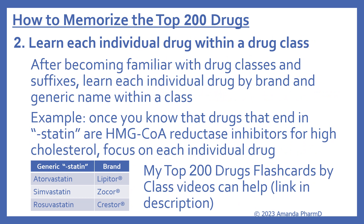Number two for how to memorize the top 200 drugs: learn each individual drug within a class. After becoming familiar with drug classes and suffixes, learn each individual drug by brand and generic name within a class. Continuing with our statin example — once you know that drugs ending in 'statin' are HMG-CoA reductase inhibitors for high cholesterol, you can focus on each individual drug. For example, atorvastatin's brand name is Lipitor, simvastatin is Zocor, and rosuvastatin is Crestor. My top 200 drugs flashcards by class videos can help with this, and I'll put the link in the description.